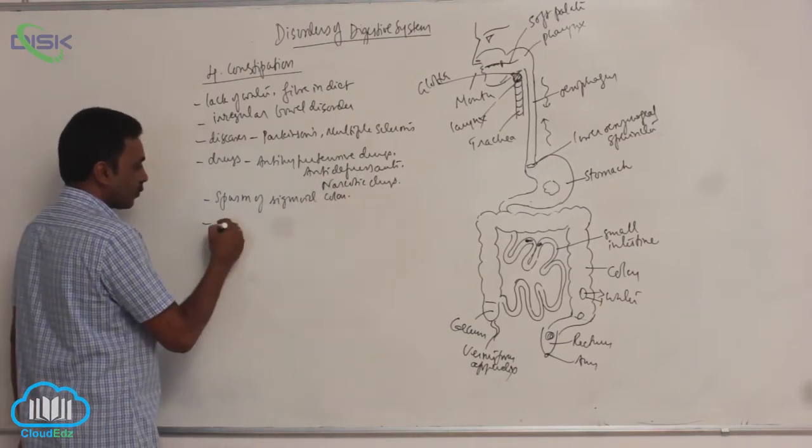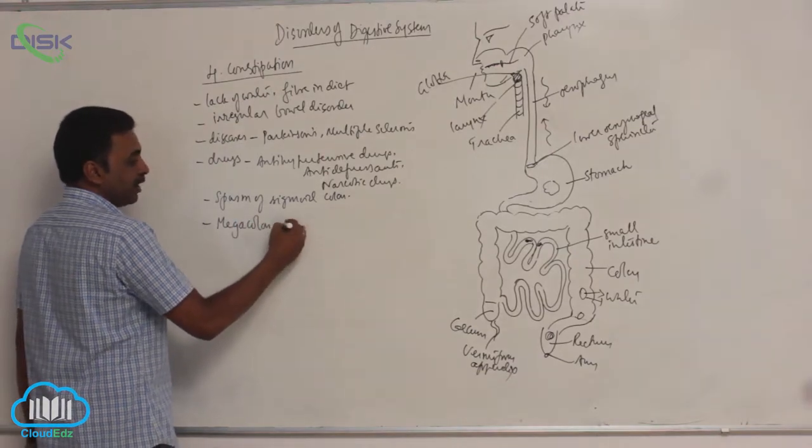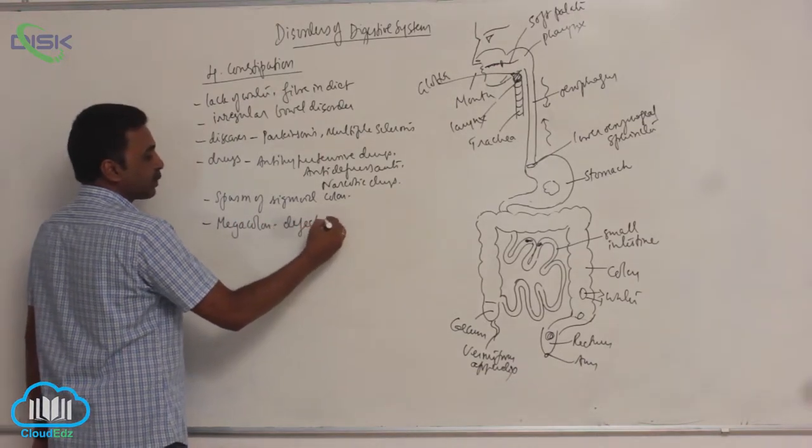Other causes include spasm of sigmoid colon or mega colon due to defect in myenteric plexus.